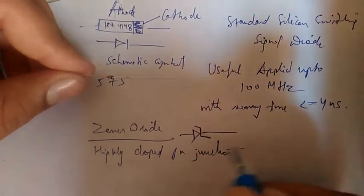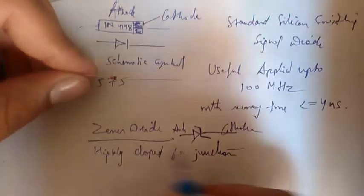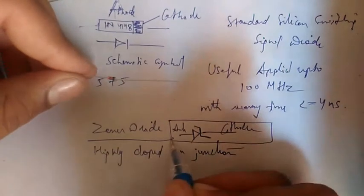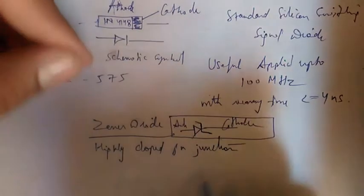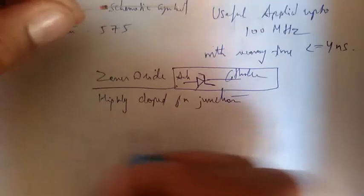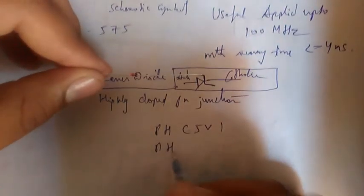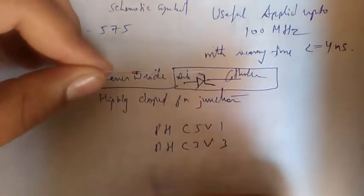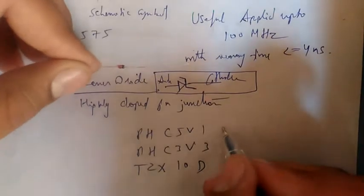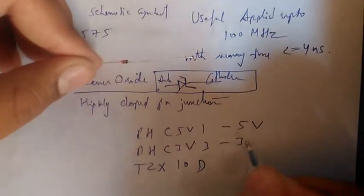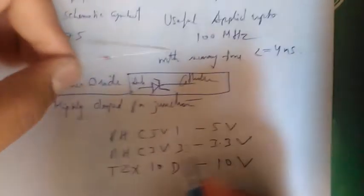The symbol of the Zener diode has a bent cathode line — this side is anode and this side is cathode. On this Zener diode it is written like PHC51, PHC3, V3, TZX10D — meaning this value is 5 volts, this value is 3.3 volts, and this value is 10 volts.